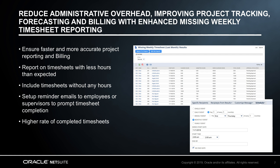Timesheets are the lifeblood of a services organization, providing the key data from which project reports can be kept accurate and up-to-date, billing can occur, and project forecasting can be assessed and planned. Outstanding timesheets can be a roadblock to these important processes. In the 19.1 release, we've added additional capabilities and new information to the missing timesheet report, making it more helpful and meaningful to the user. In addition to reporting on timesheets with less hours than expected, users can now include timesheets without any hours. Reminders can also be automatically scheduled to prompt employees and their supervisors to encourage timesheet completion. All lines on the report can be used to drill down into the details, improving project tracking, forecasting, and billing as a result of more timely timesheet submission.